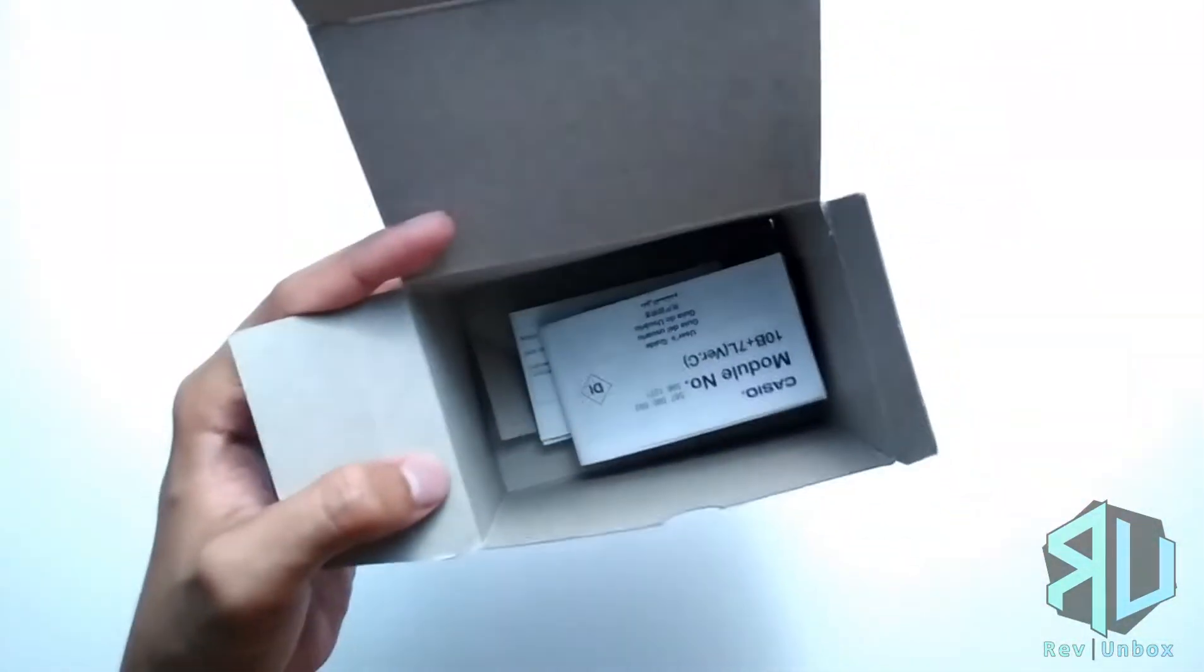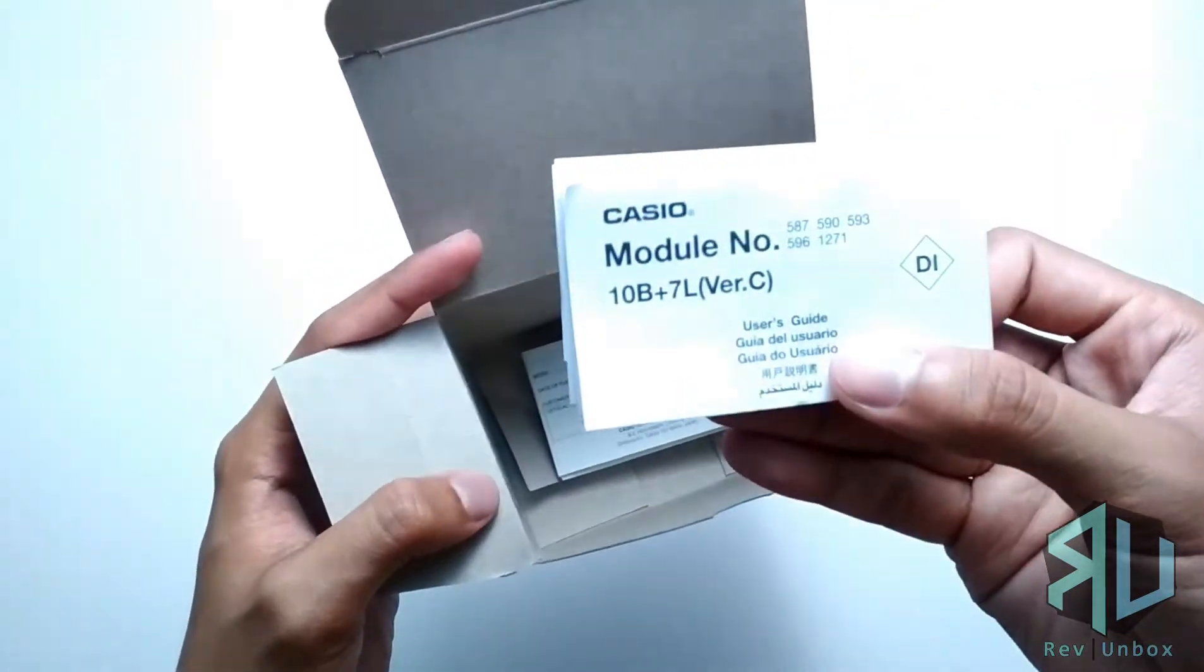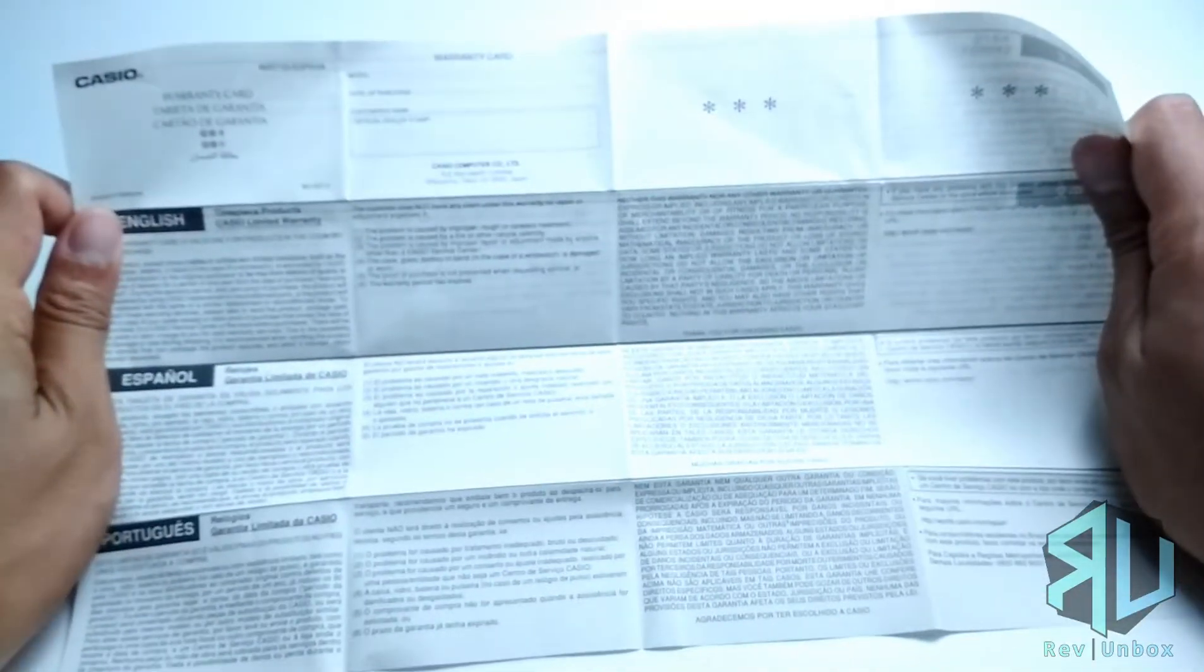So at the bottom covered with cardboard, we have the manual and the warranty card. The features we are going to talk about in the next part is covered in detail here in the manual.